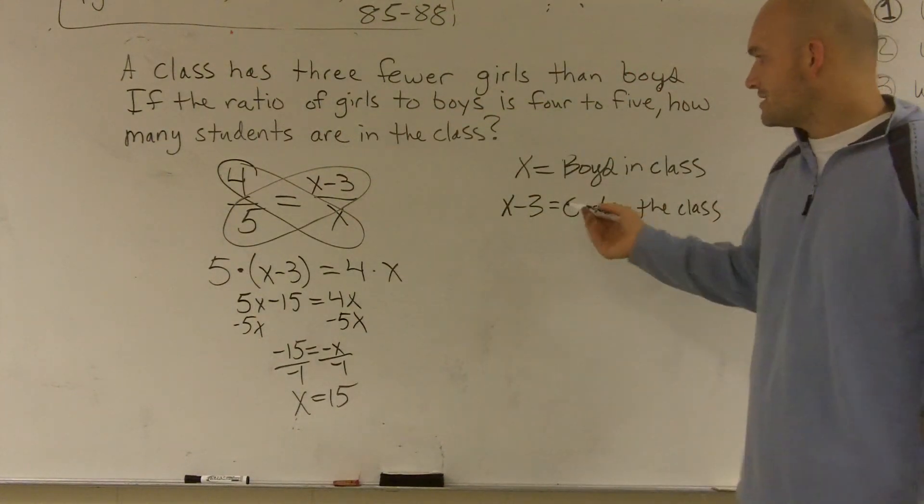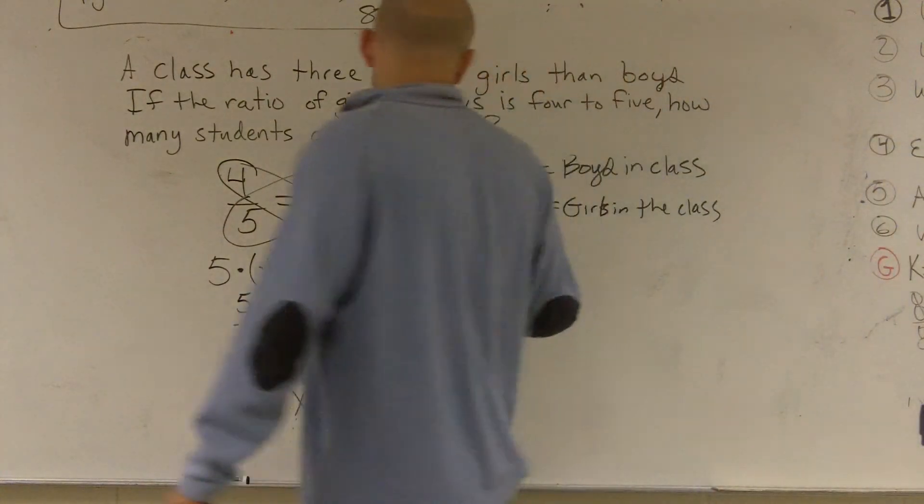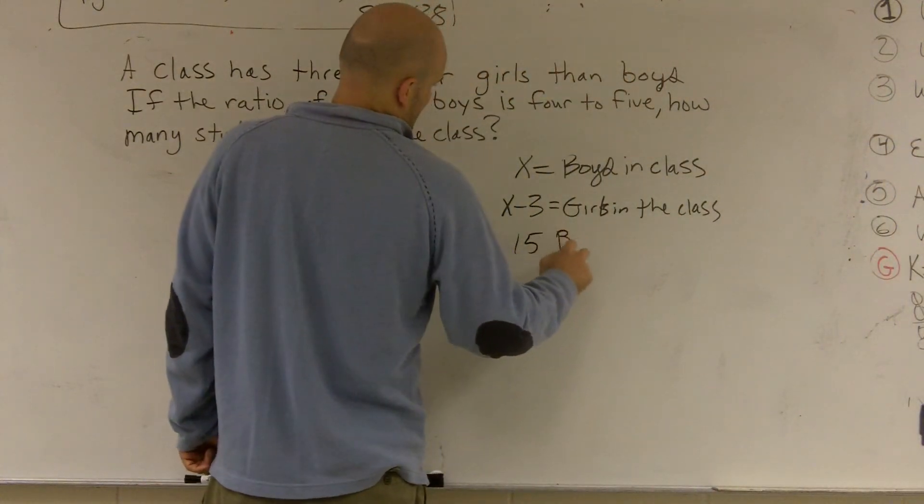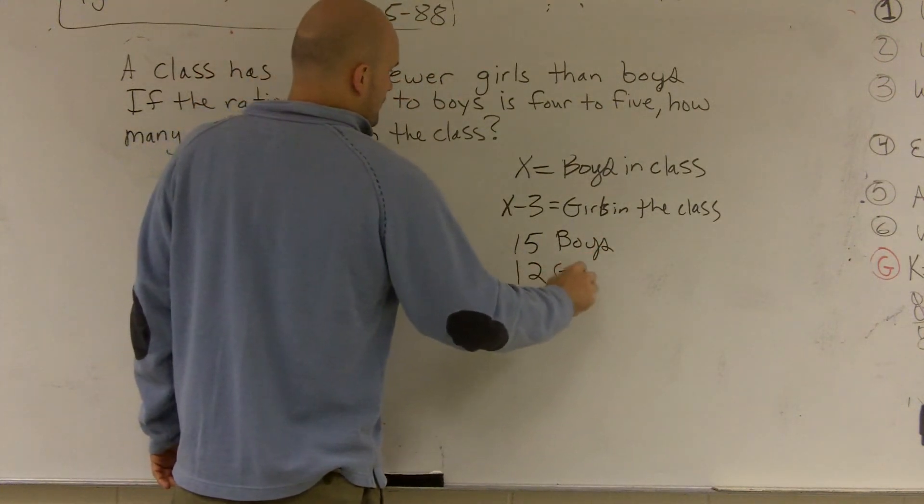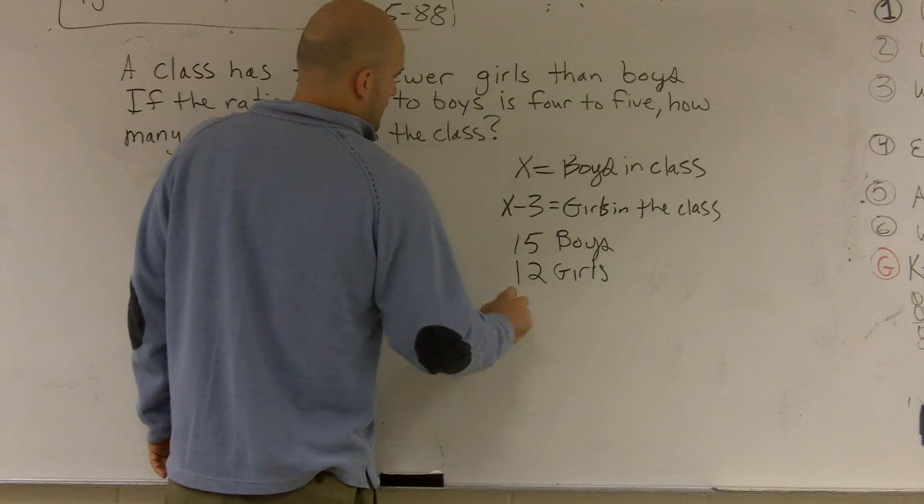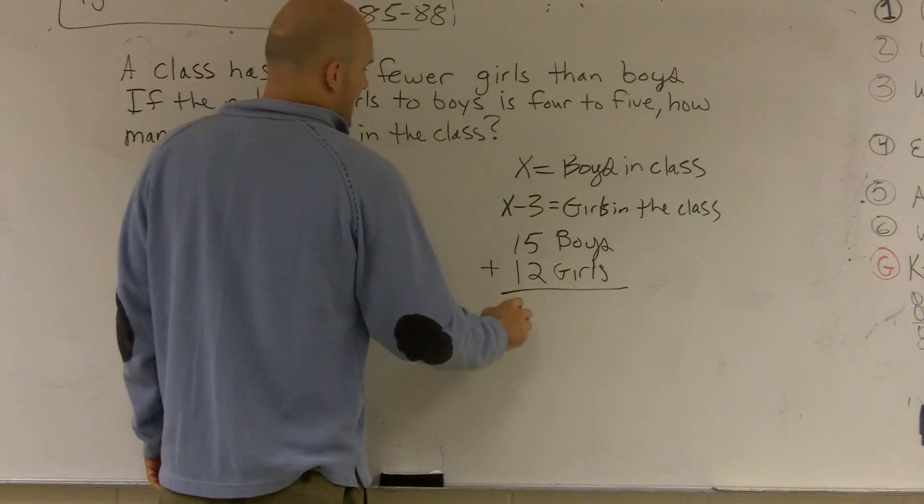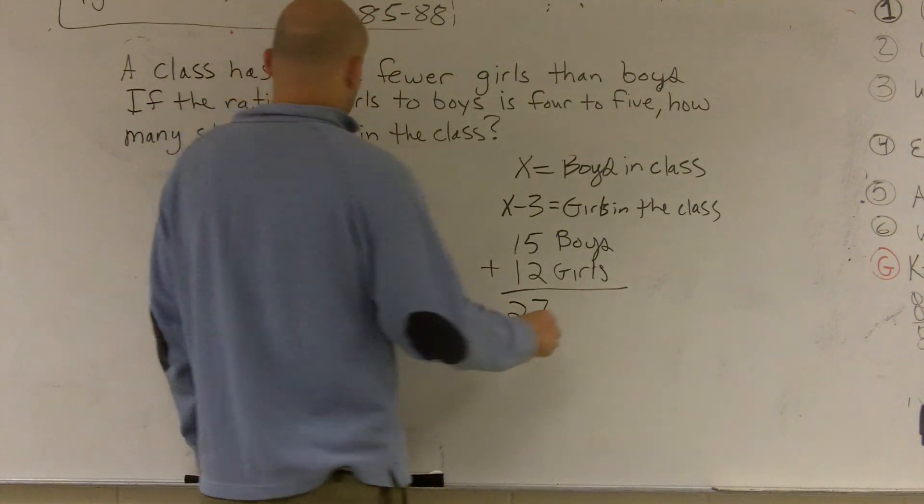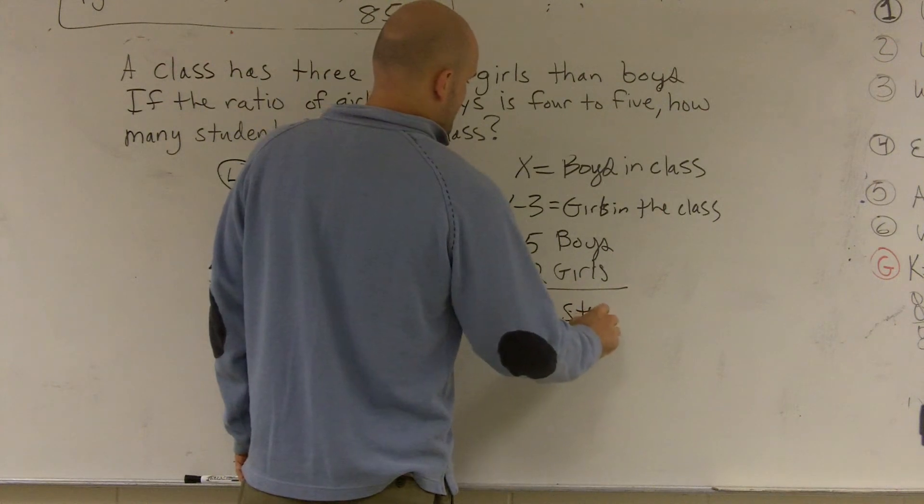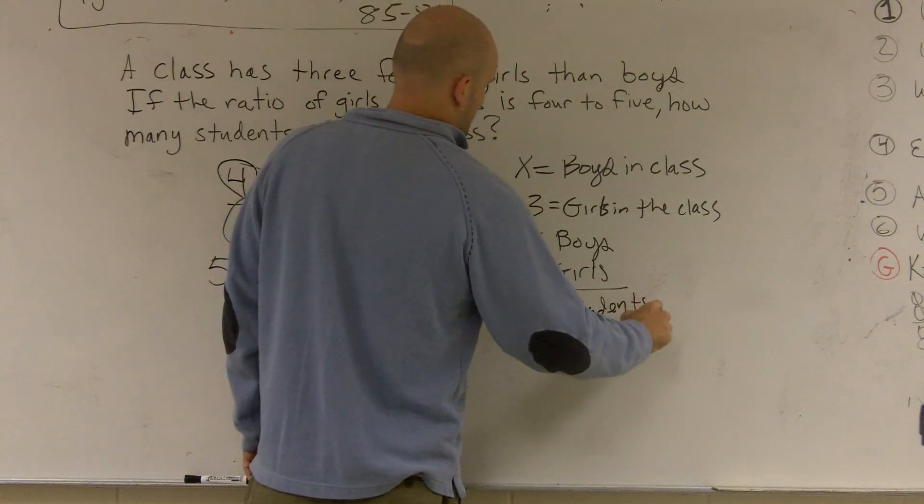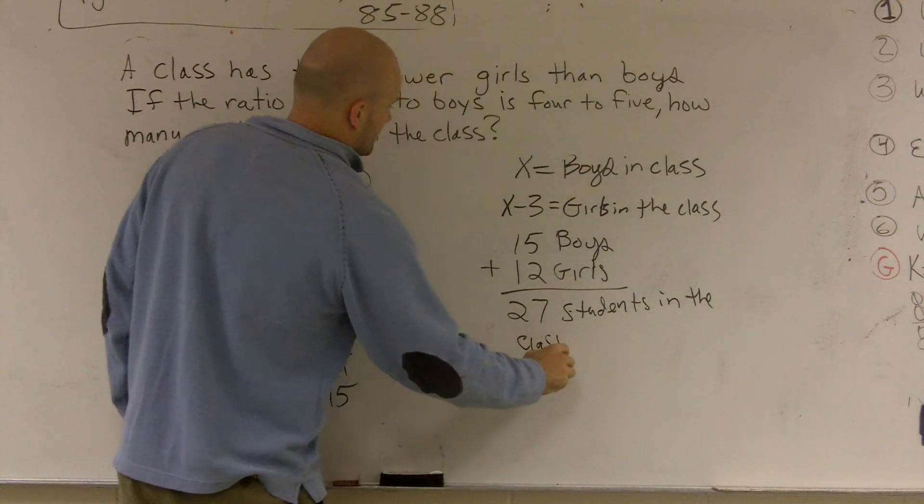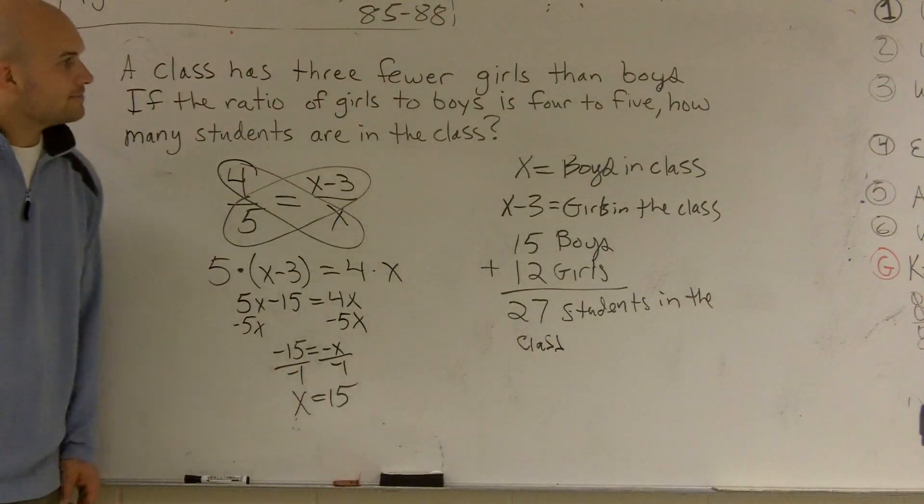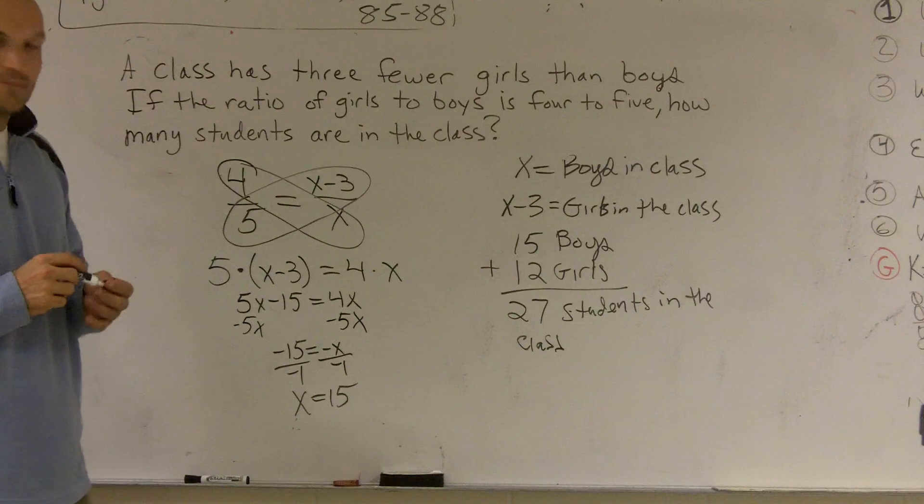So you can say there's going to be 15 boys, and 15 minus 3 is going to be 12 girls. Add them together, you get 27 students in the class. All right? So that's how you solve a word problem using proportions.